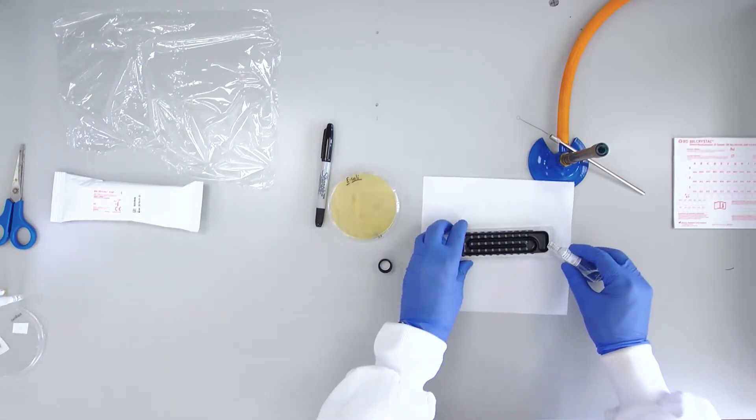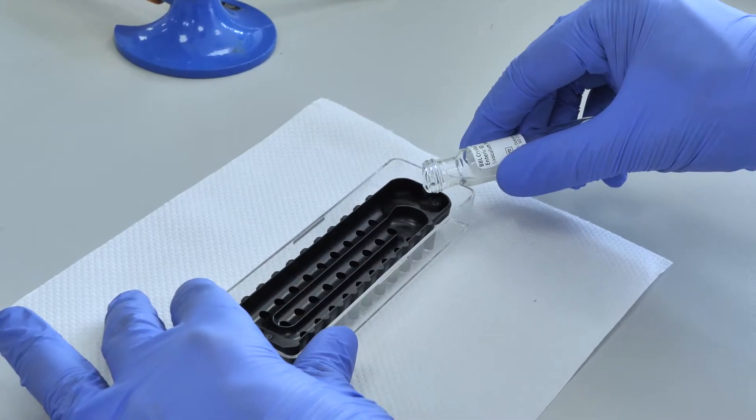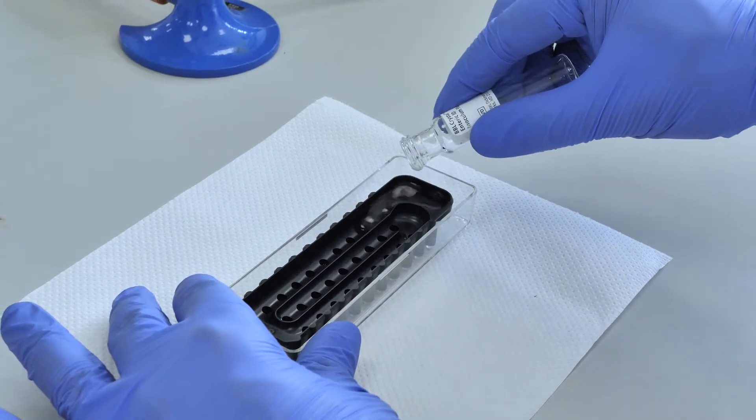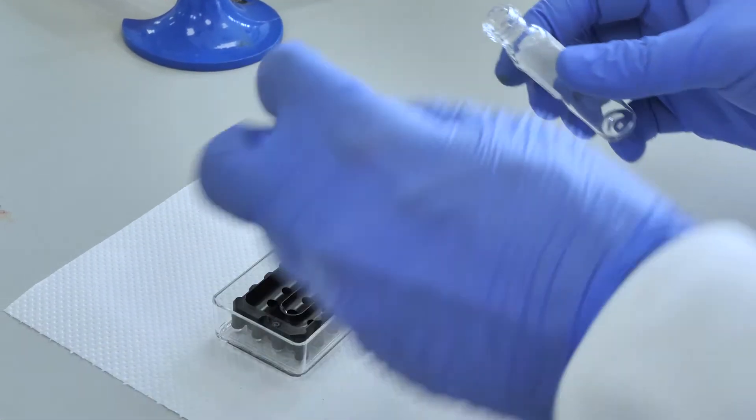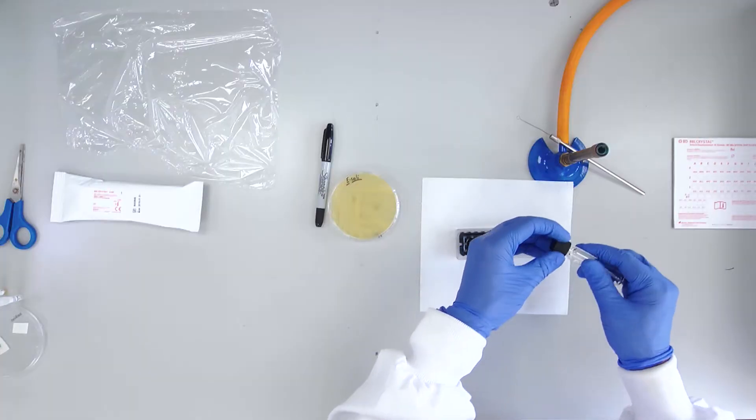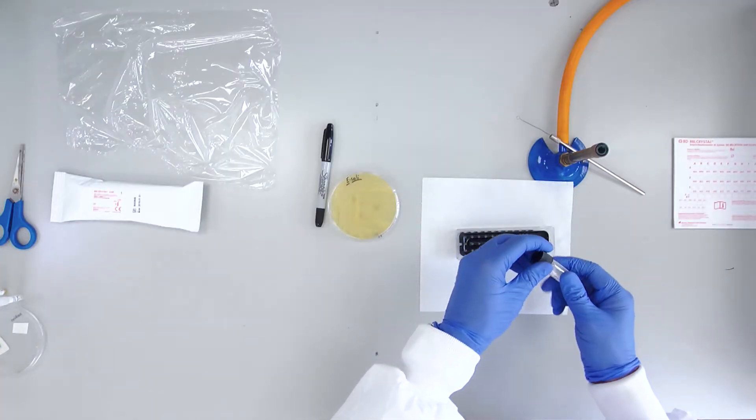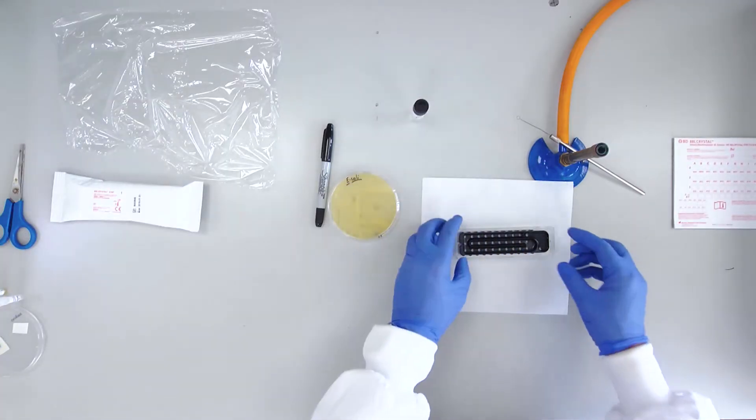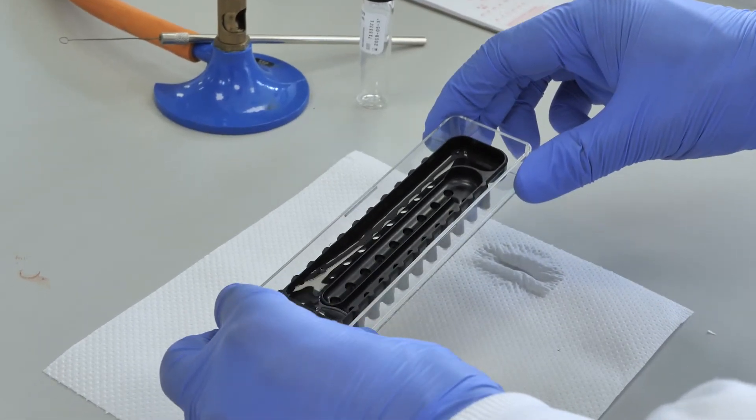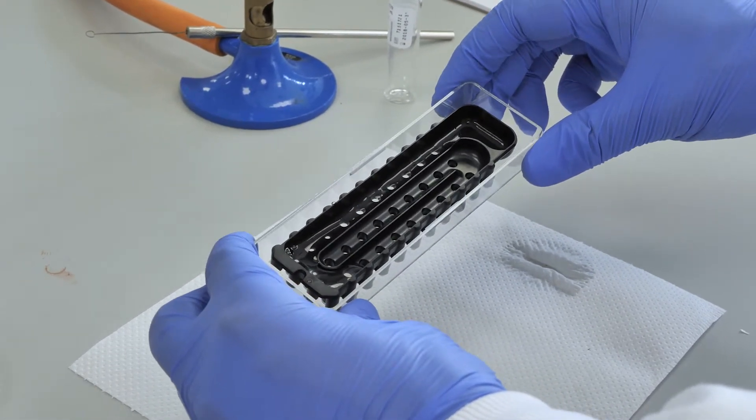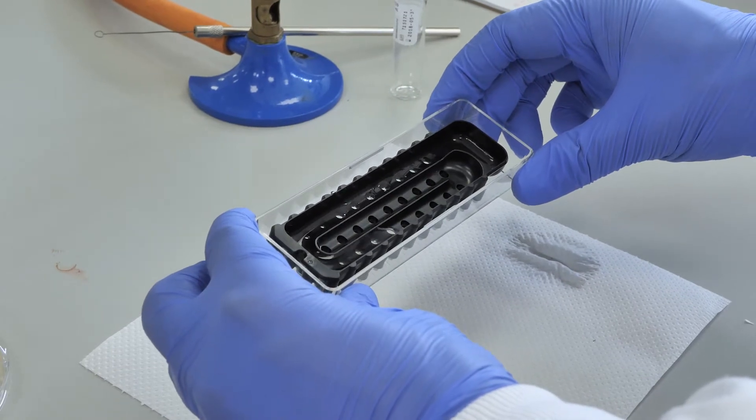Pour the contents of the inoculum into the target area of the base. Slowly roll the inoculum liquid gently along the tracks until all of the wells are filled.